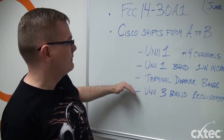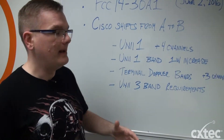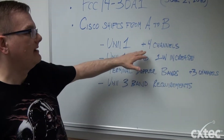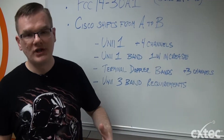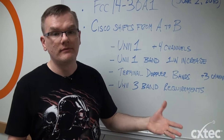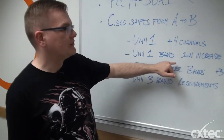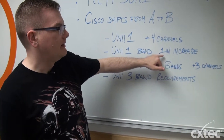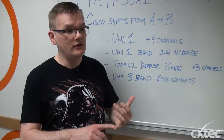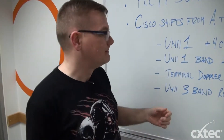I have these laid out. There are four major ways in which B changes the game. The first being the Uni-1 band is adding four channels — simple enough, but opening up some expandability. The Uni-1 band is also increasing its power output by one watt, and that's for indoor, outdoor, and point-to-point communications.